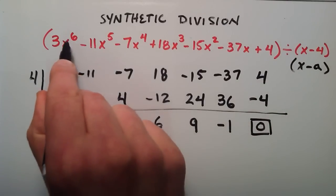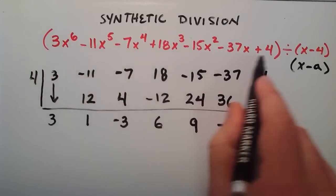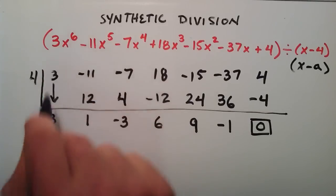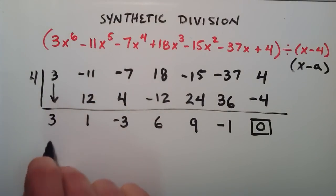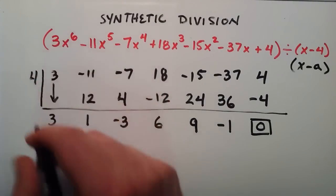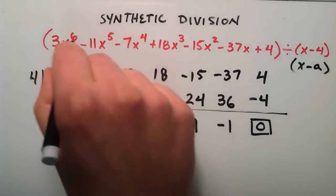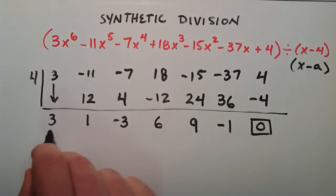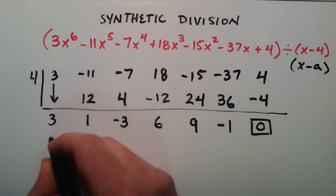And so now since we started with x to the 6th in this polynomial here, then basically this is going to be the coefficient of x to the 5th. It's always 1 less than whatever the highest order was. So because we had a 6th degree polynomial, the answer is going to be a 5th degree polynomial.